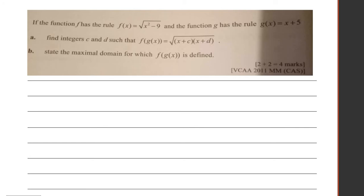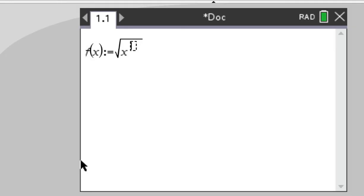Now this is a function f of x equals x squared minus 9 and g of x equals x plus 5. Let's see how we can do this using a CAS calculator. So I have defined f of x as x squared minus 9 and g of x as x plus 5.